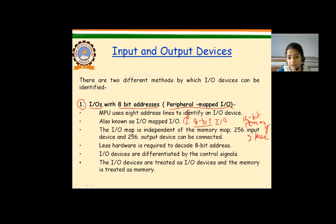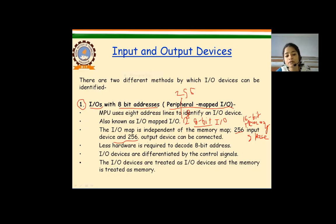Using 8 address lines gives 2 to the power 8, which is equal to 256. So 256 number of input and output devices can be identified or addressed with this mechanism. This range of 256 addresses is called IO space since it is an 8-bit numbering system.